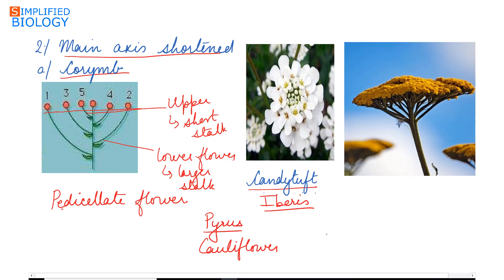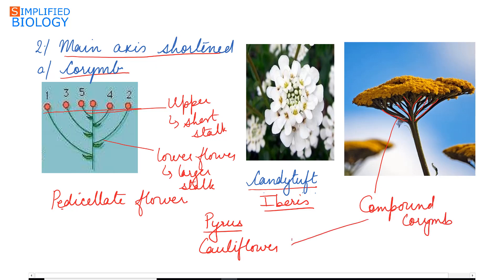When the main axis is branched in the form of a corymb and each branch is further a simple corymb, that is known as a compound corymb. Example: cauliflower.